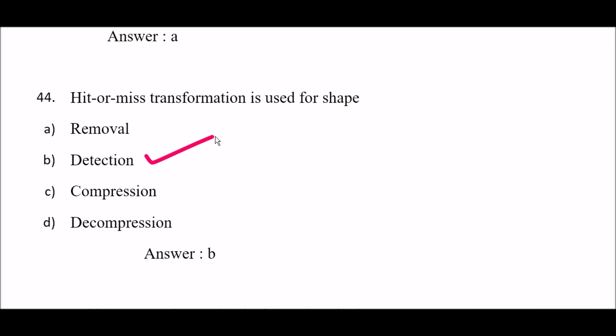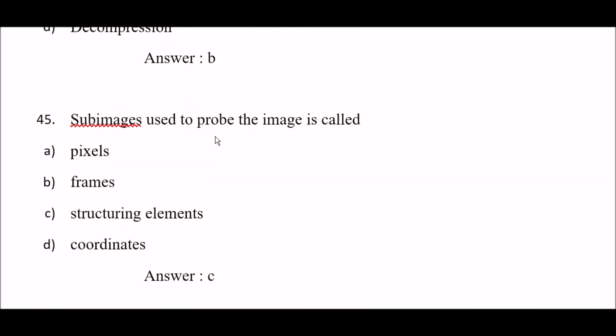Next question: sub-images used to probe the image are called — option A: pixels, option B: frames, option C: structuring elements, option D: coordinates. The right answer is option C — structuring elements.